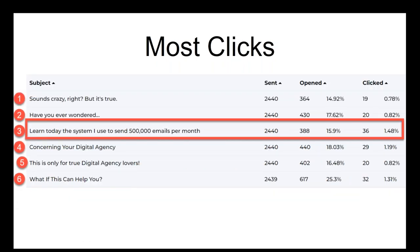Three! Many of you guys had the right answer. 'Learn today the system I used to send 500,000 emails per month' had the highest output — 36 clicks. Compared to 32 for line six. It's close, but many people who opened that email also clicked on it. Three really won from number six — not by a mile, but it did.